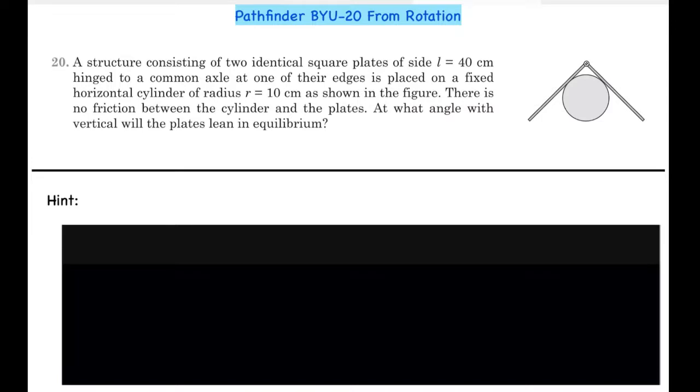A structure consisting of two identical square plates of L equals to 40 cm, hinged to a common axle at one of the edges, is placed on a fixed horizontal cylinder of radius R equals to 10 cm as shown in the figure. There is no friction between the cylinders and the plate. At what angle with the vertical will the plates lean in equilibrium?